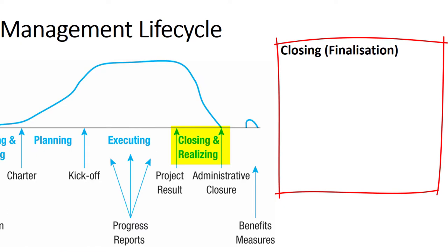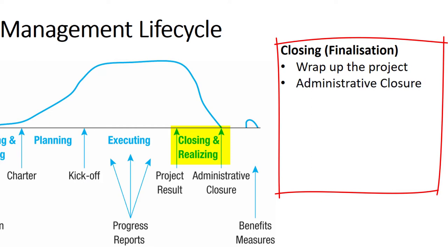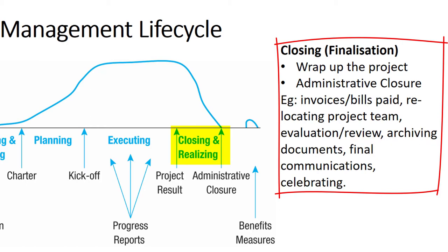This stage can also be called finalisation. Once the client has signed off that the project has been delivered to expectations or other specific success criteria, the project manager closes off the project. It's now time to wrap up the final components, which could involve tasks to bring about administrative closure, such as ensuring all final bills or invoices are paid, relocating project team members to other areas of the organisation or new projects, conducting evaluation and review activities, and archiving documents and other records.